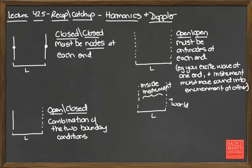In the case of a guitar, violin, or stringed instrument, this is an example of a closed-closed boundary, where the harmonics that are possible must require that the endpoints — if you have a string of some length L — those two points must be nodes. They must be nodes if you set up a standing wave; those nodes cannot move.